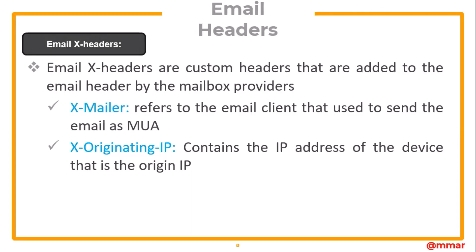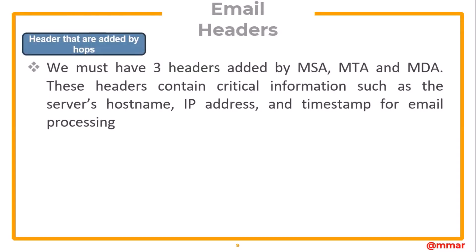Then come the email X-headers, which are custom headers added to the email header by the mailbox providers. X-Mailer refers to the email client that was used to send the email as the MUA. X-Originating-IP contains the IP address of the device that sent the email. Then are the headers added by MSA, MTA, and MDA. These headers contain critical information such as the server's hostname, IP address, and timestamp for email processing, and are added by all intermediate nodes and servers.